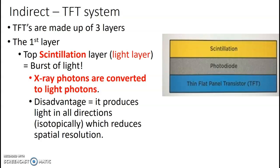The TFT system — I'm going to start with that one. It's made up of three layers. The first layer is a scintillation layer. When you do an x-ray of a patient, the x-rays pass through the patient and hit your image receptor. The scintillation layer, also referred to as a light layer, converts those x-ray photons into light photons. The only disadvantage is it produces light in all directions, termed isotropically, which slightly reduces spatial resolution.